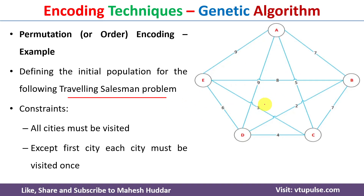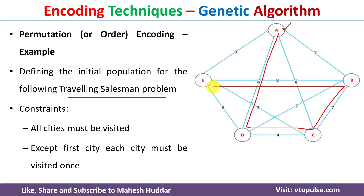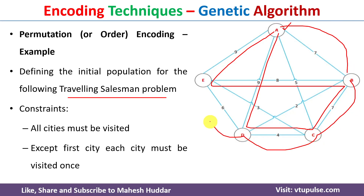We have to encode the chromosomes for this constraint. For example, the salesman starts from A, goes to D, then C, then B, then E, and back to A — giving the chromosome A-D-C-B-E-A. Another chromosome could be A-B-C-D-E-A, and so on. Because order is important in this problem, this kind of encoding is called permutation or order encoding.